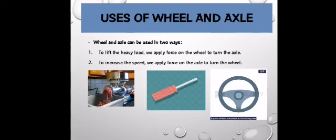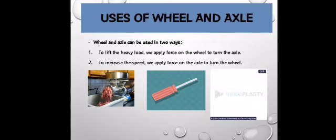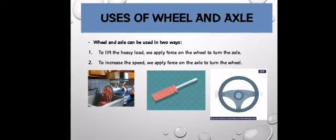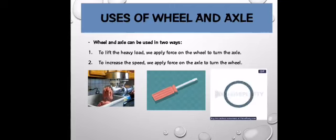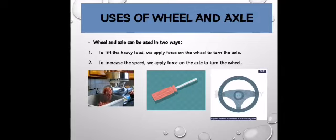Second one is a screwdriver, that is the simplest example of a simple machine. You rotate the broader part which is working as a wheel, and as a result the axle will also turn the narrower part, and it will help to screw or unscrew the nuts and bolts.